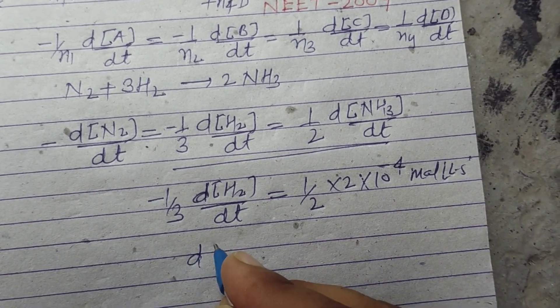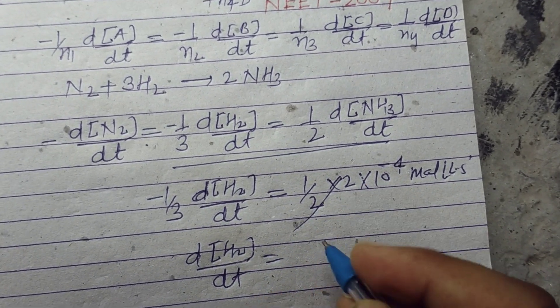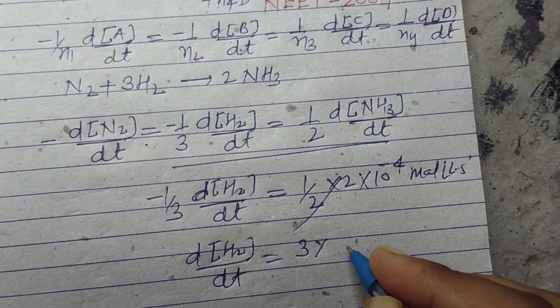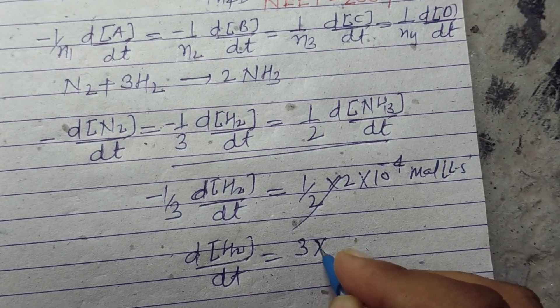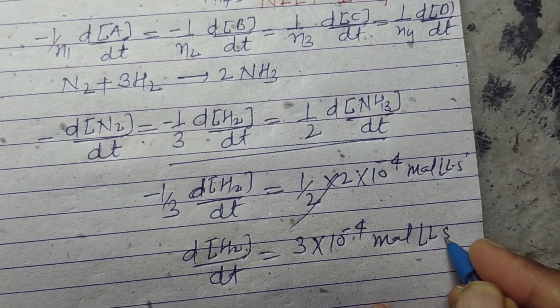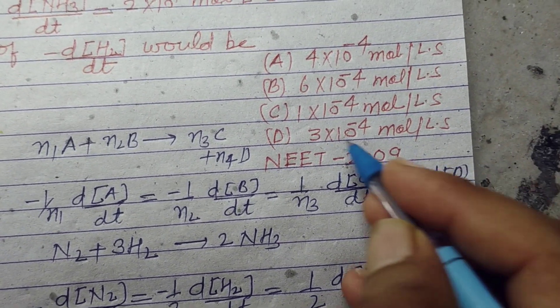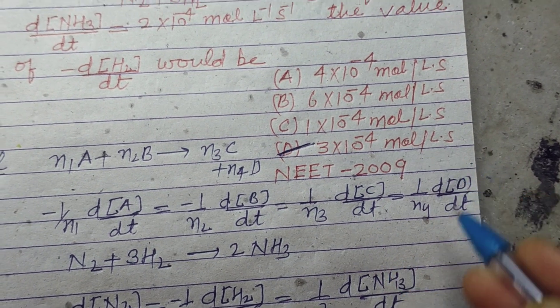So d[H2]/dt is 3×10^-4 mole per liter per second. 3×10^-4 mole per liter per second is the answer to this question.